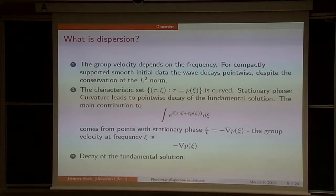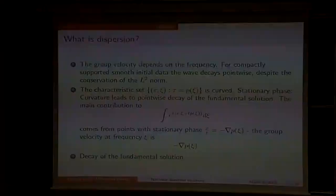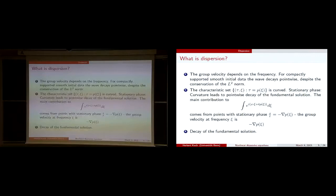So maybe that answers your question a bit. On the Fourier side you get a multiplication by something of size one pointwise, so the L^2 norm is conserved. Even though the L^2 norm is conserved, the wave spreads out and decays. This is one way of defining what dispersion is.